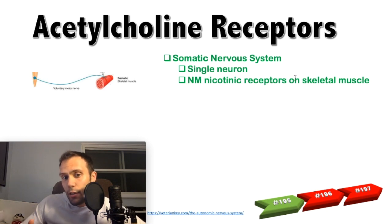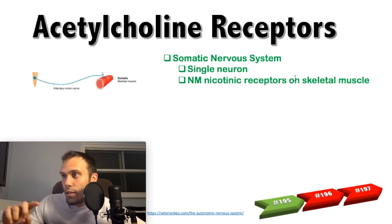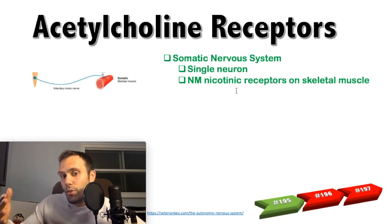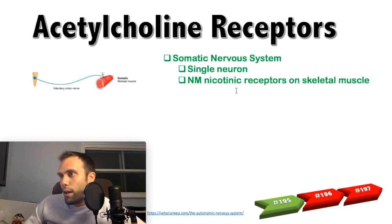Under the category of nicotinic receptors, there are NM receptors and NN receptors. Think of M as muscle — NM receptors are on skeletal muscle. NN receptors are the ones found in the autonomic nervous system.